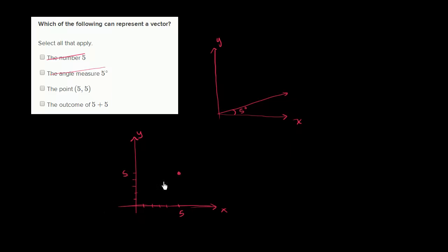And so if you said that this represents the, essentially the head of a vector whose tail is at the origin. So the vector would look something like this. Now you're giving both a magnitude and a direction. What's the magnitude?